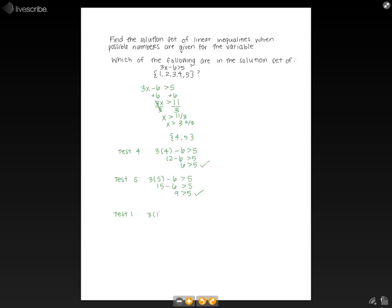So, that would be 3 times 1 minus 6 is greater than 5. So, 3 times 1 is 3 minus 6 is greater than 5. So, that's negative 3 is greater than 5. And we know that's not true.